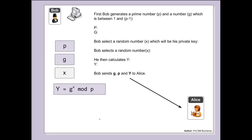With public key encryption, we generate two keys. Bob generates a public key and a private key. The public key he distributes to Alice. She encrypts a message with his public key and then sends it back, and Bob decrypts with his private key.